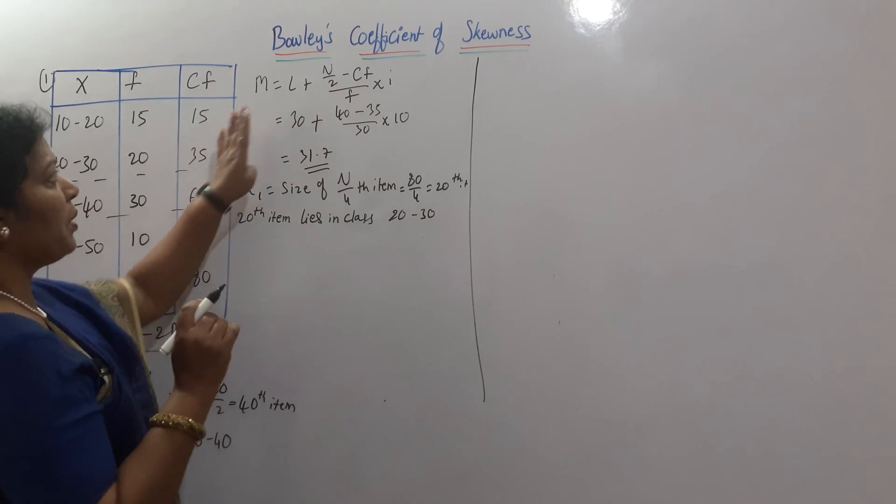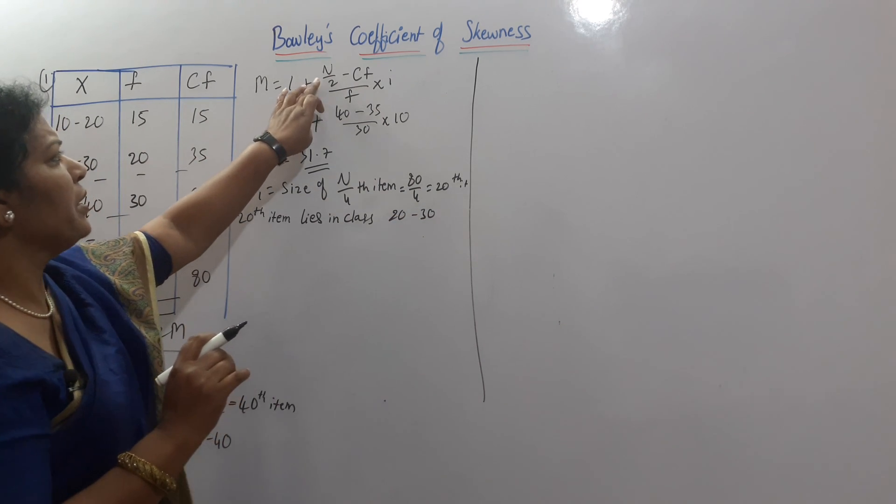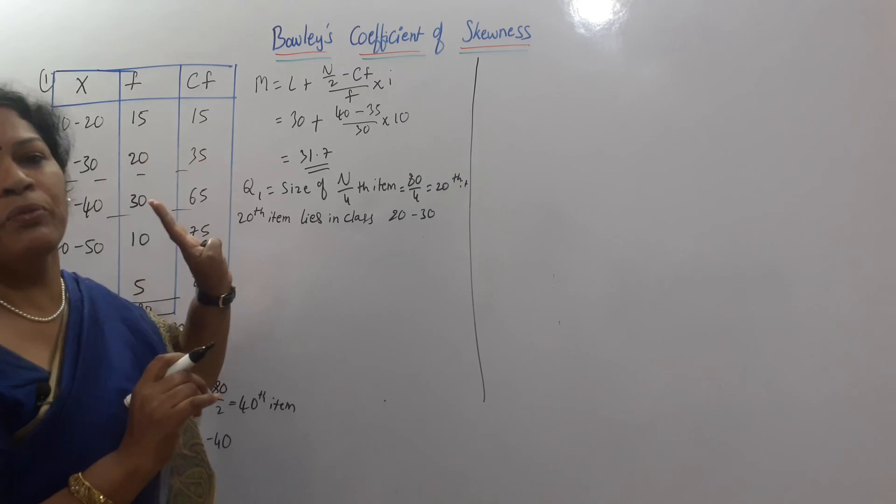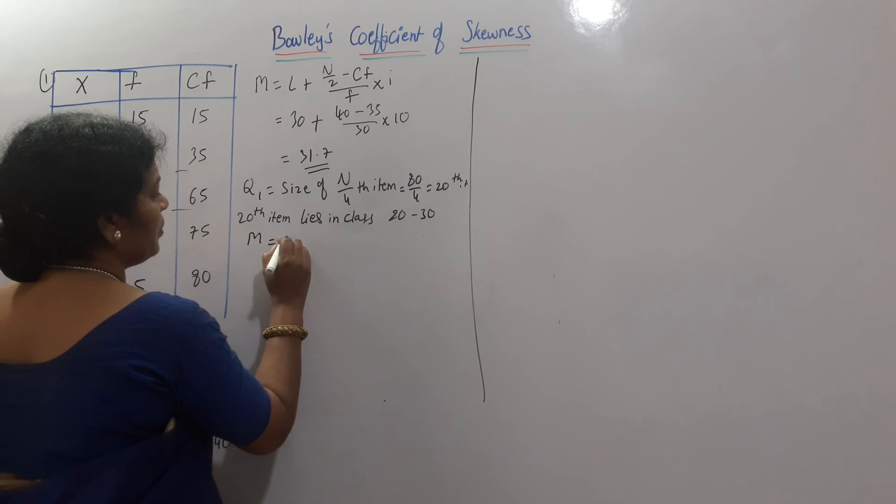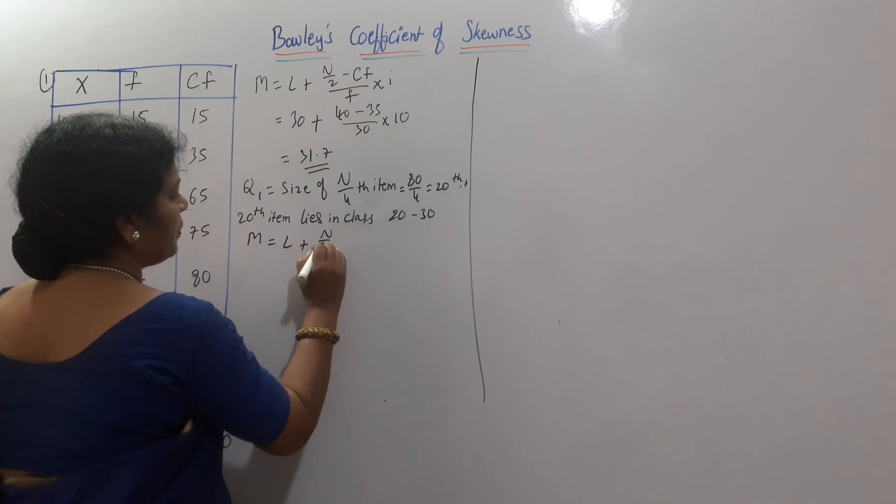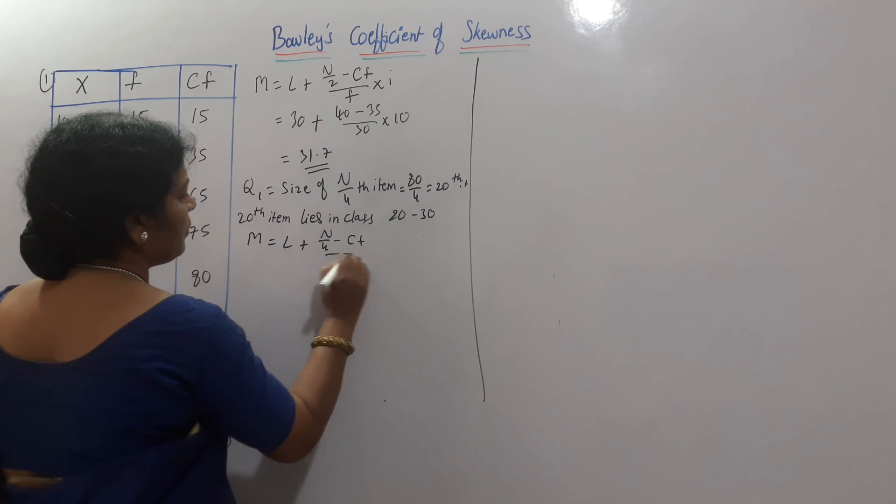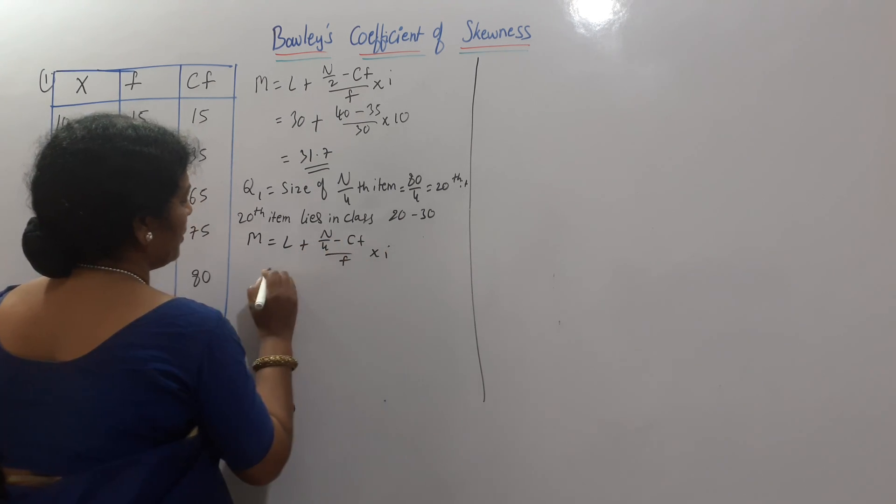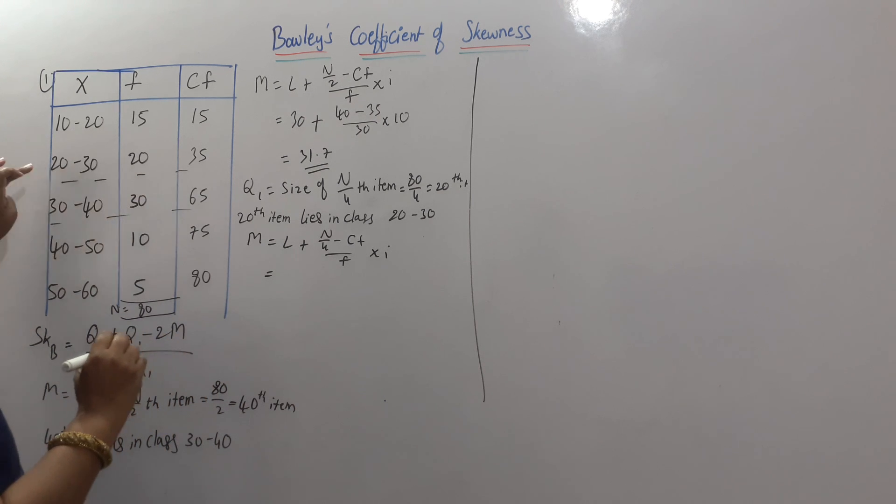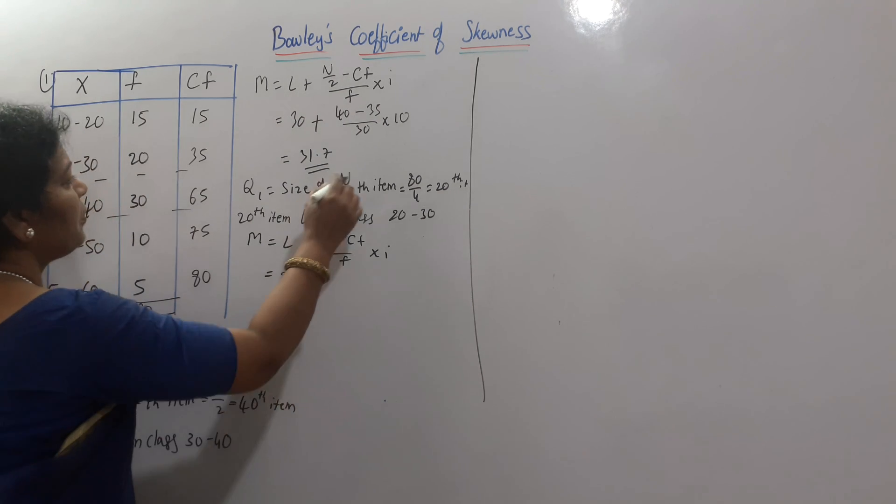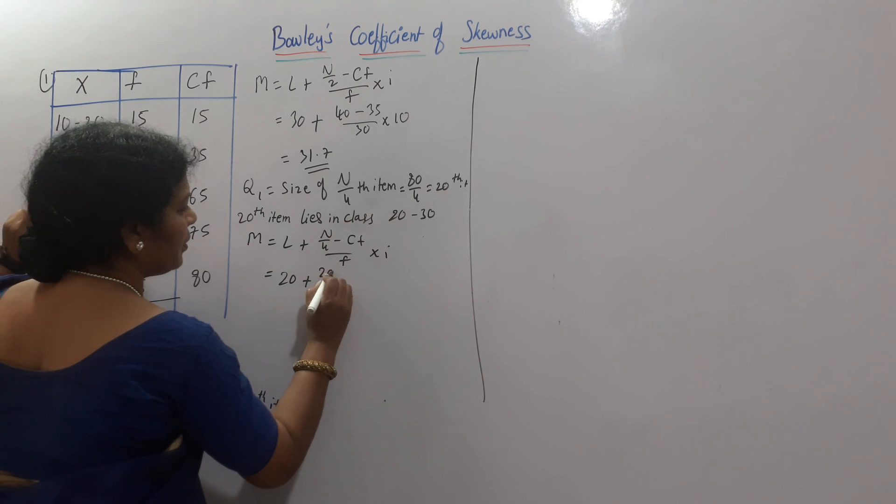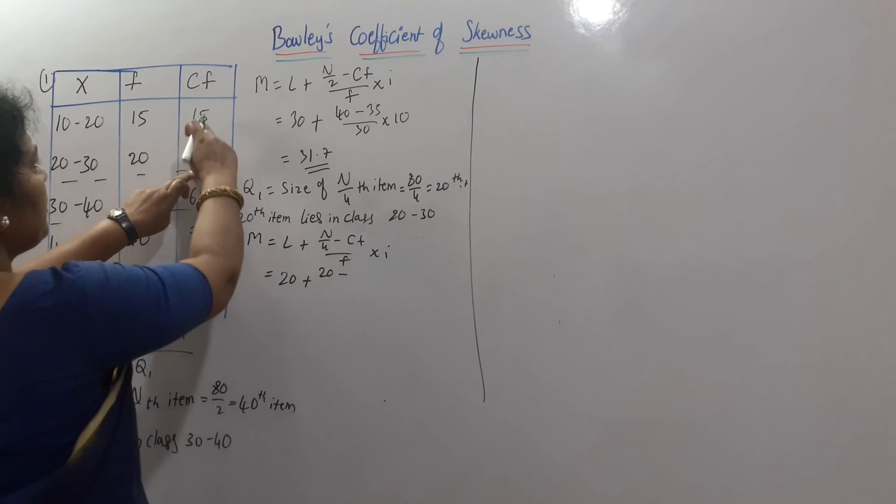Now, as per the formula, formula is same. L plus, instead of N by 2, we will write N by 4. This is equal to L plus N by 4 minus CF by frequency into I. So, this lies here. So, lower class interval is 20. N by 4 is, already we have done 20. Minus CF. CF means this one is CF, 15.